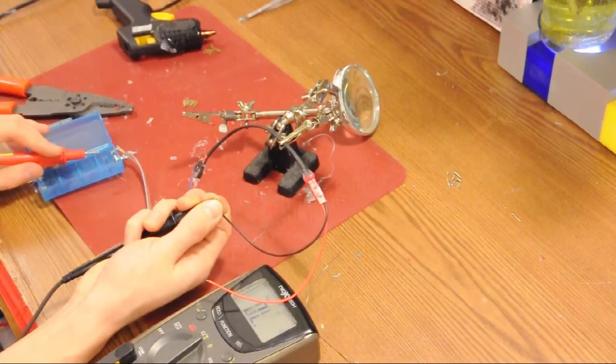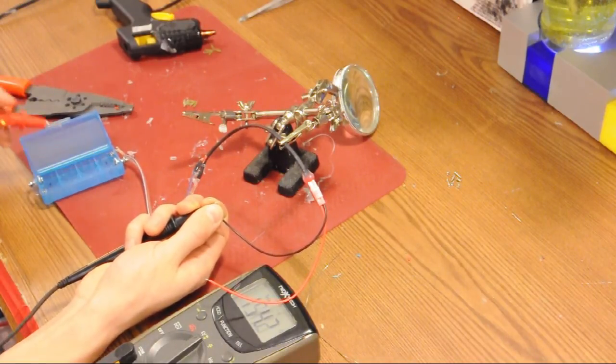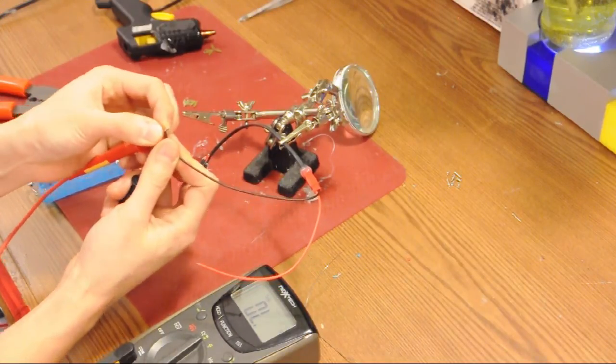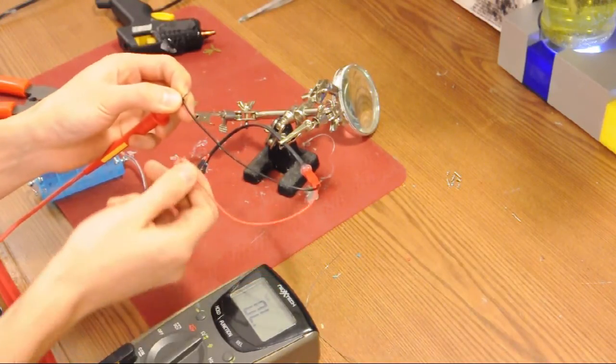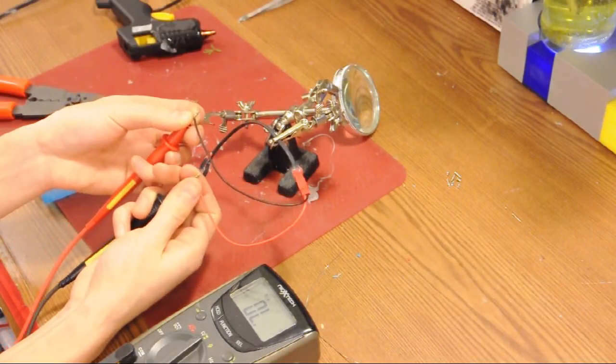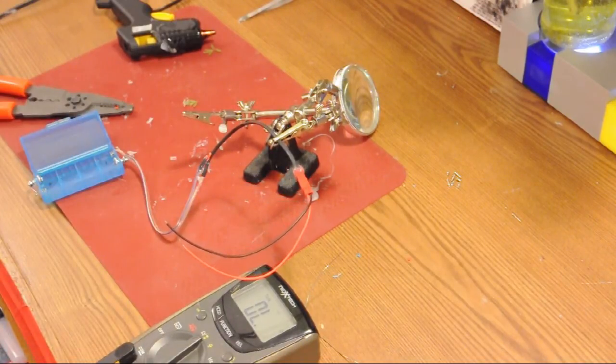Now, the negative terminal. Good. And now we're going to check the black wire against the red wire to see if we have a short circuit anywhere. And we don't. So it's all good. It works well.